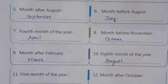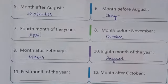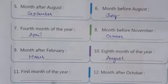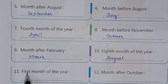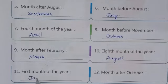Question number eleven: the first month of the year. Which month is the first month? Of course, January. J-A-N-U-A-R-Y.